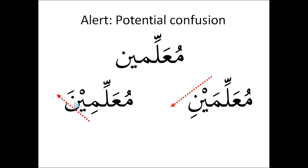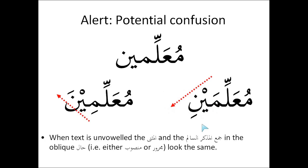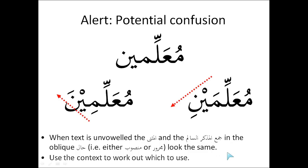The important thing to remember is the direction of the vowels. In the dual مُعَلِّمَيْنِ, the vowels go from up to down: the ميم has a فتحة (up), the ياء has a سكون (on the line), and the نون has a كسرة (below the line). Whereas with مُعَلِّمِينَ — the Sound Masculine Plural — we start below the line with a كسرة, the ياء has a سكون, and the نون has a فتحة going above the line. When the vowels go in that upward direction, that's the Sound Masculine Plural. When they go downward, that's the مثنى — both in the منصوب and مجرور state.